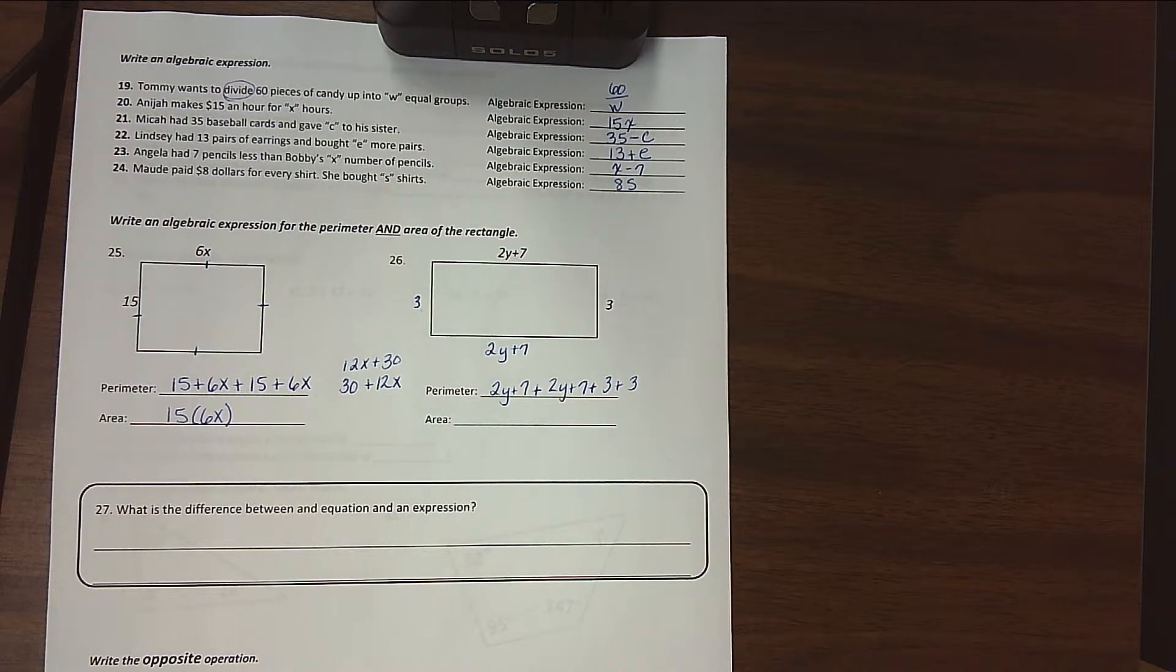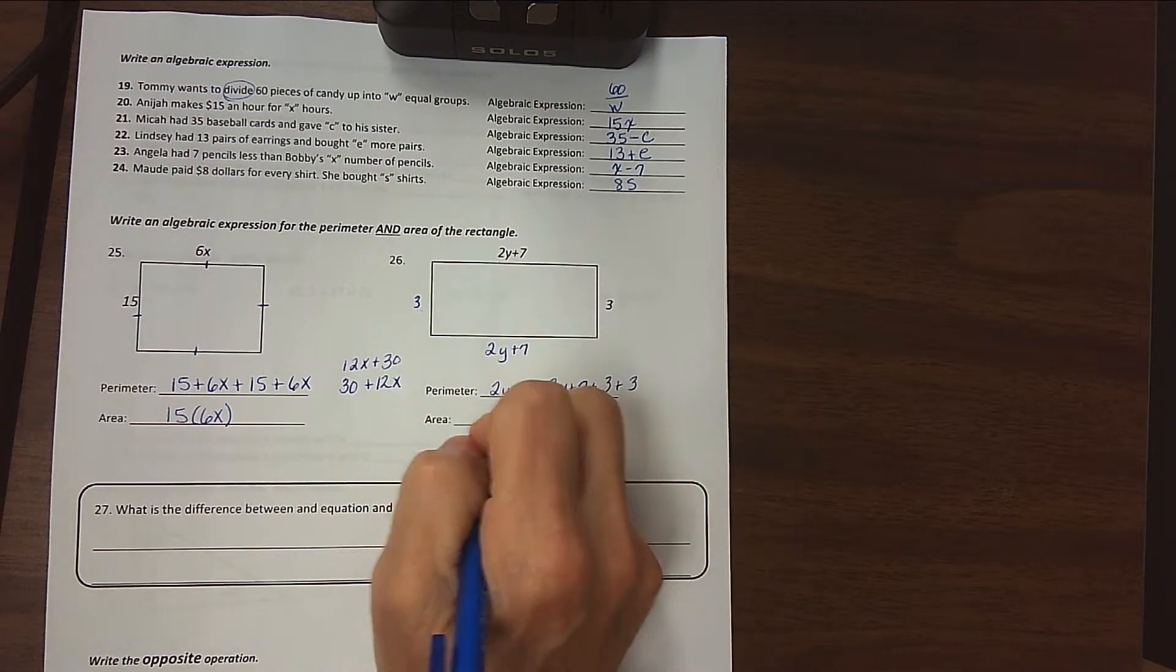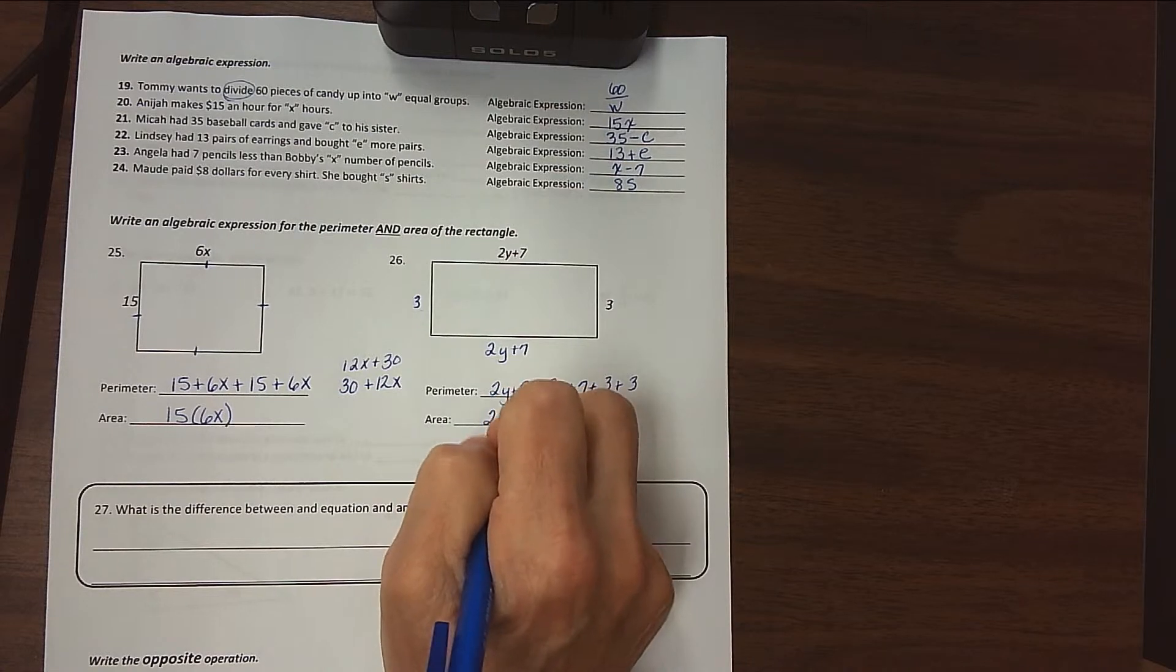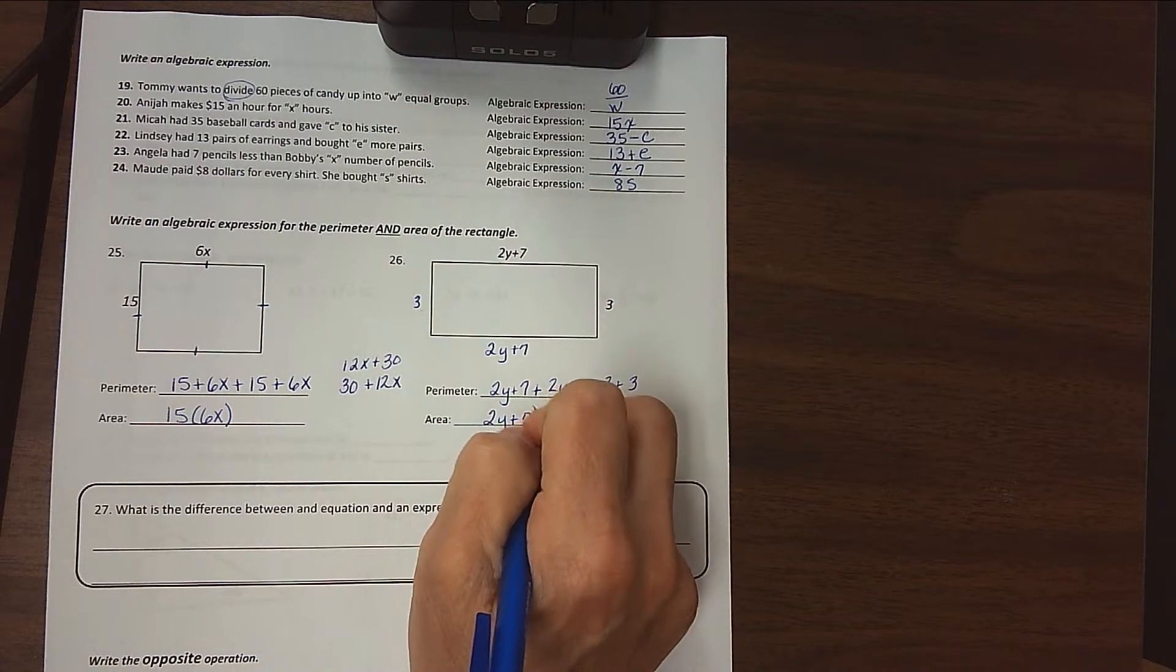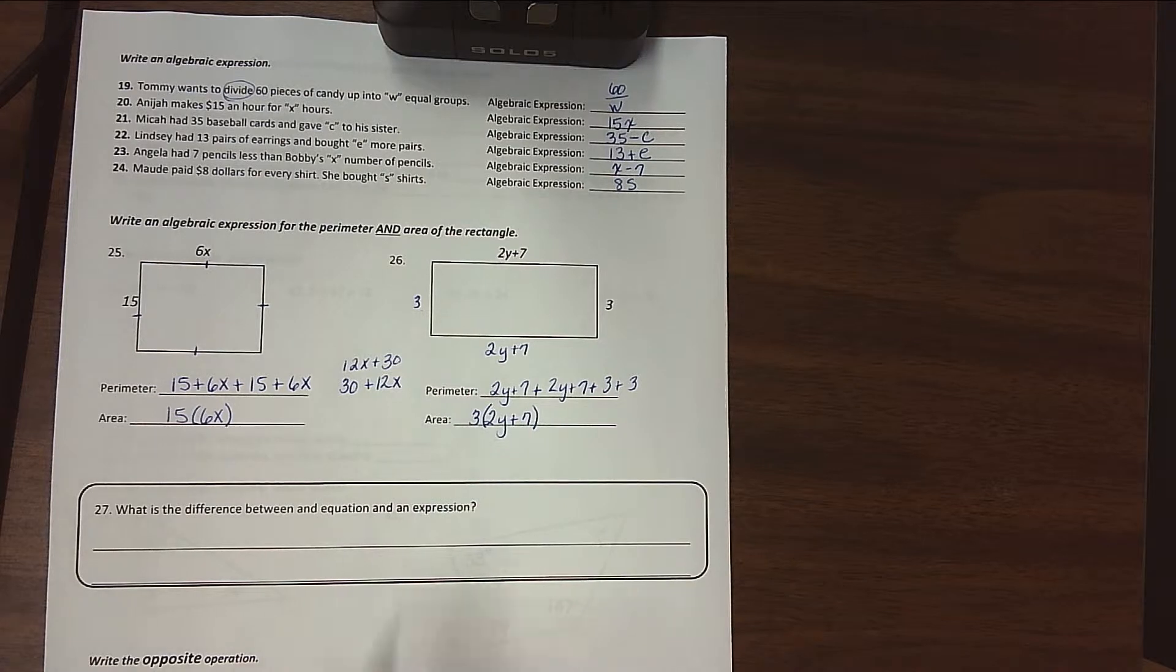All right, area then is length times width. So this would be 2Y plus 7, and then we multiply all of that by 3. So that's length times width.